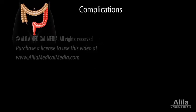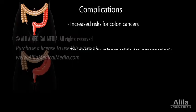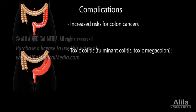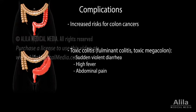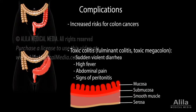In the long term, UC may increase risks for colon cancers, but the most dangerous complication to watch out for is toxic colitis, or fulminant colitis — a life-threatening condition characterized by sudden violent diarrhea, high fever, abdominal pain, and signs of peritonitis. Toxic colitis occurs when inflammation extends into the smooth muscle layer of the intestinal wall, paralyzing the colon muscle.